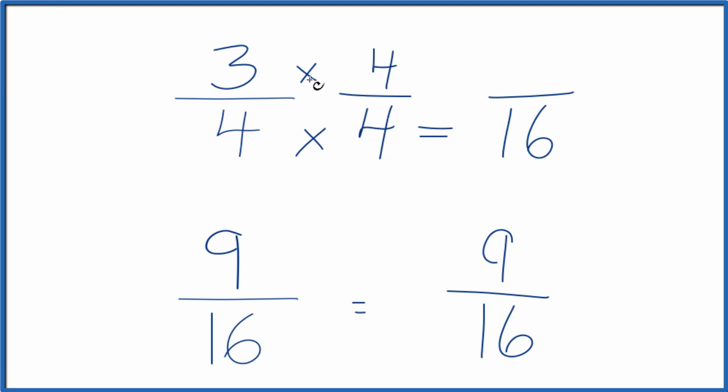But now, 3 times 4, that's 12, and we get 12 sixteenths. And that has the same value as 3 fourths, because we just multiplied by 1. They are equivalent fractions.